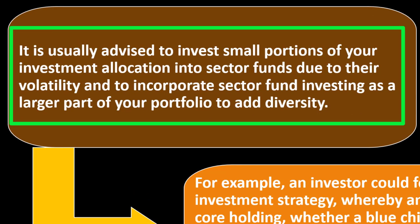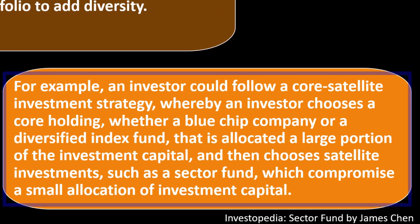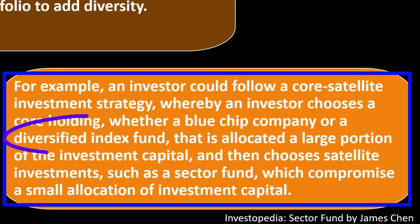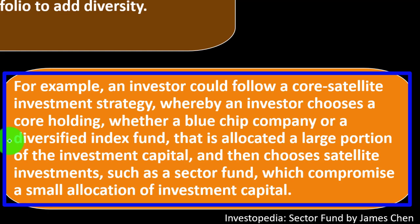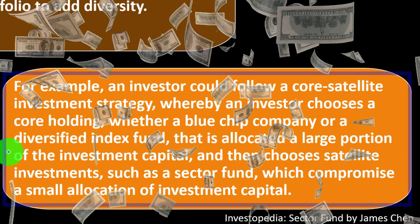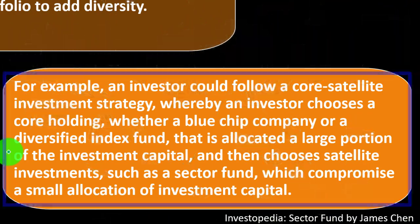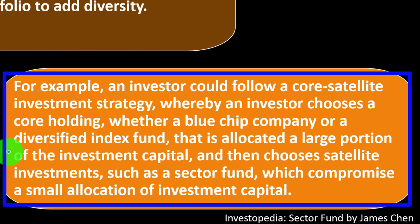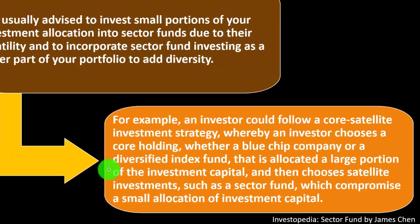It is usually advised to invest small portions of your allocation into sector funds due to their volatility. One approach is a core-satellite investment strategy: an investor chooses a core holding — such as a broadly diversified index fund — which receives the largest portion of investment capital, then chooses satellite investments like sector funds that comprise a smaller allocation. This gives a little more weight to particular sectors while keeping the portfolio well-diversified overall.